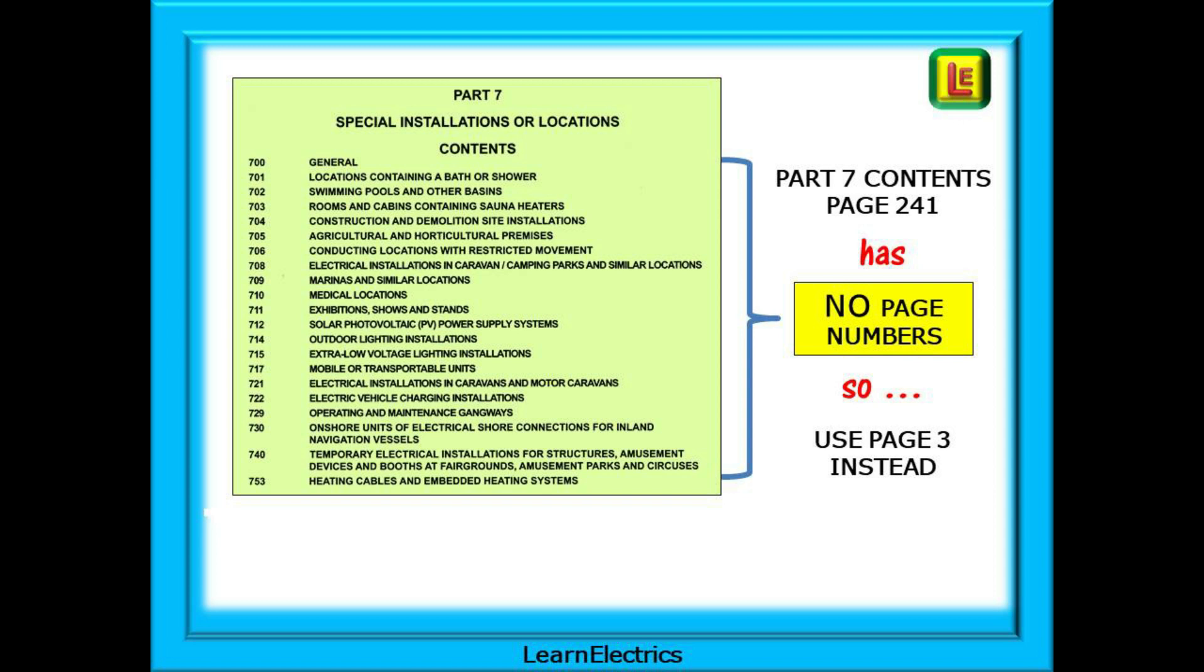Part 7 contents on page 241 is exactly the same as page 3, but it has no page numbers and gives you no more information, so what good is that? So on this occasion, I suggest that you stick with page 3 contents page only. After all, it is the page numbers that you want in order to find the answers quickly.